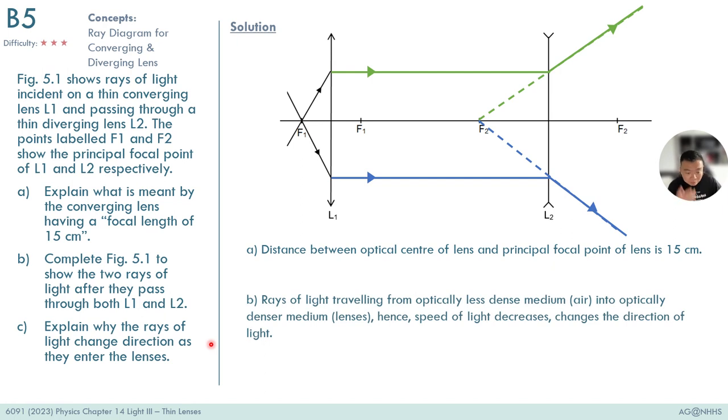In part C, explain why the rays of light change direction as they enter the lenses. This is technically a refraction question. Recall what happens during refraction. Refraction happens when light passes between mediums of different optical density. Check that you have the words optical density written, not just density, but optical density.